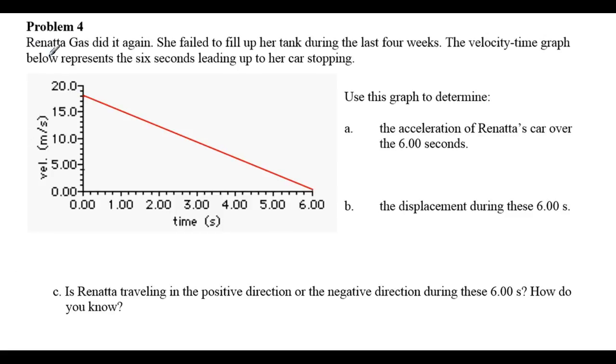This is on page 32. Here it is. Renata Gas did it again. She failed to fill up her tank during the last four weeks. The velocity-time graph below represents the six seconds leading up to her car stopping.